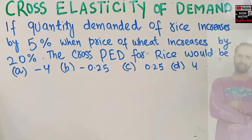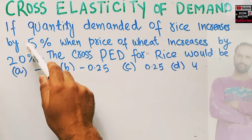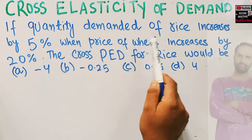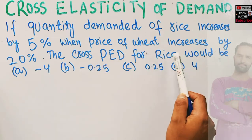In this video we will solve a problem on cross price elasticity of demand. The question is: if quantity demanded of rice increases by 5% when price of wheat increases by 20%, the cross price elasticity of demand for rice would be...